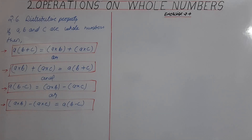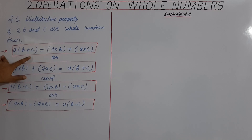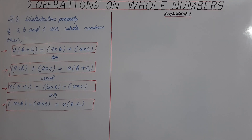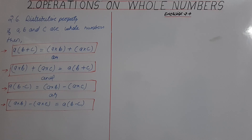Next property: distributive property. If A, B and C are whole numbers, then A multiplied by B plus C equals A into B plus A into C, or A into B plus A into C equals A multiplied by B plus C. Also, A multiplied by B minus C equals A multiplied by B minus A multiplied by C, or A into B minus A into C equals A multiplied by B minus C.